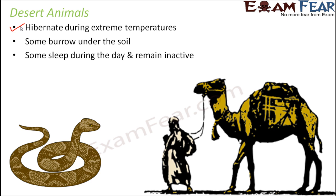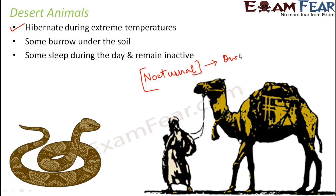Some animals remain active during the night. These animals which remain active during the night are called nocturnal animals. One such example of a nocturnal animal is the owl. It sleeps during the day to prevent dehydration and prevent any loss of water from its body, then remains active during the night. Camels, owls, and snakes are some of the animals commonly found in desert. We have already discussed how camels have adapted themselves to live in desert.